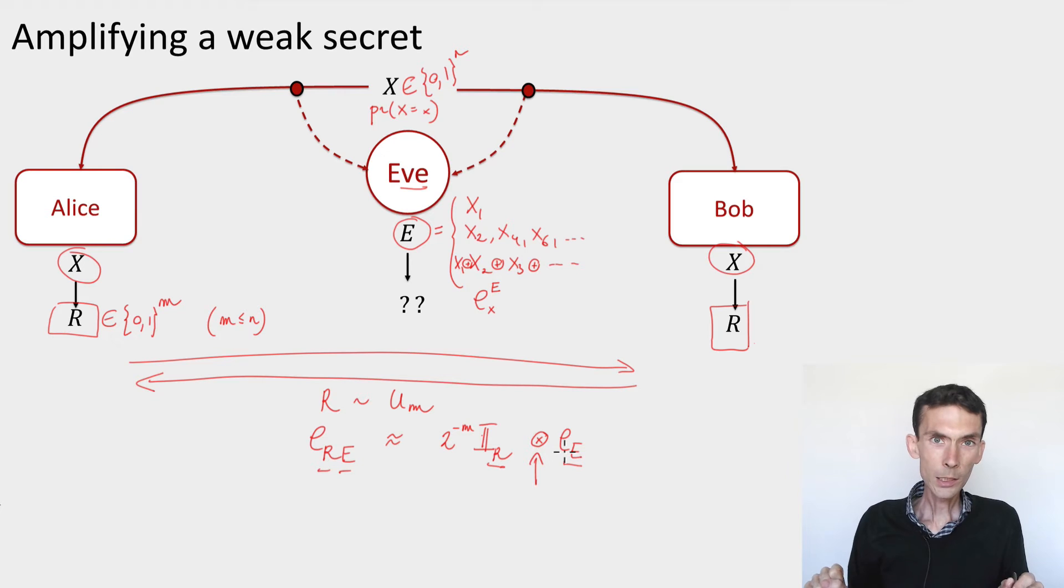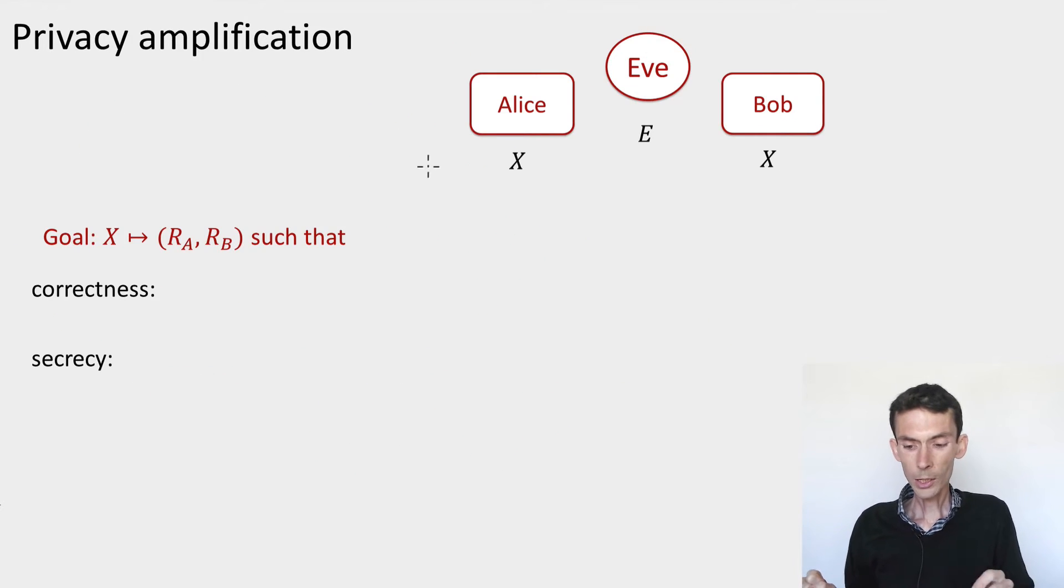So that's the goal of privacy amplification. Let me make these desiderata a little bit more precise. Same setup as before. Alice has a string x, Bob has a string x, and the eavesdropper has some side information e. We have a state ρxe, which is classical on x, quantum on e, and that's a state that's given as input to the procedure of privacy amplification.